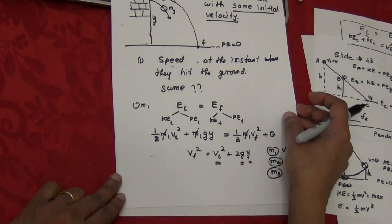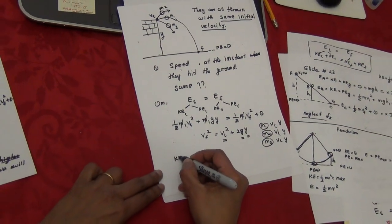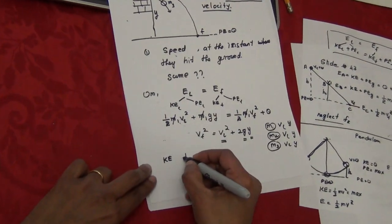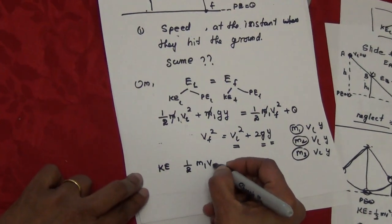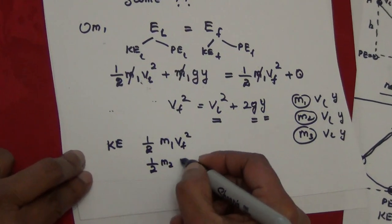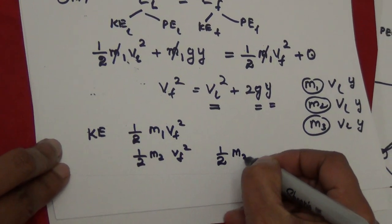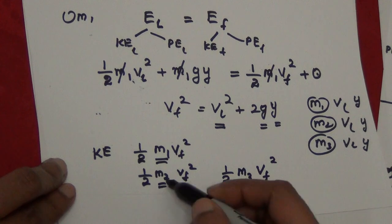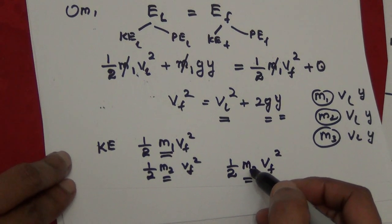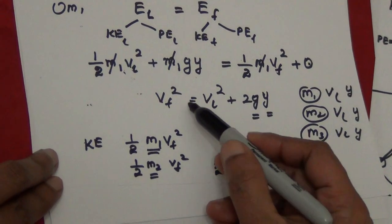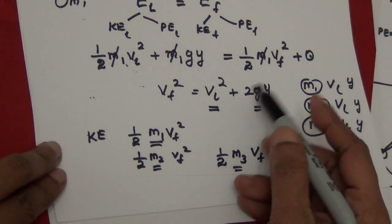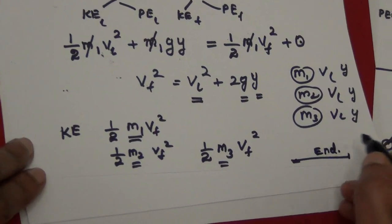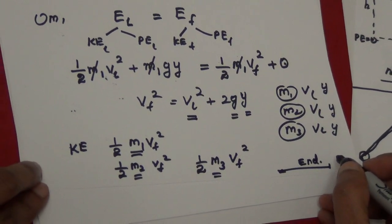However, if you ask about the kinetic energy when they hit the ground: for m1 it is ½m₁v_f², for m2 it is ½m₂v_f², for m3 it is ½m₃v_f². The final speed is the same, but the kinetic energies differ because the masses differ — the more massive ball has more kinetic energy. In the next video, we'll do example problems on conservation of energy.